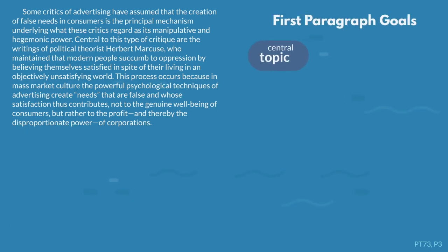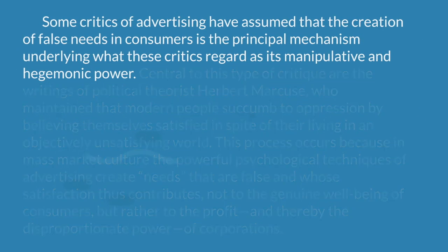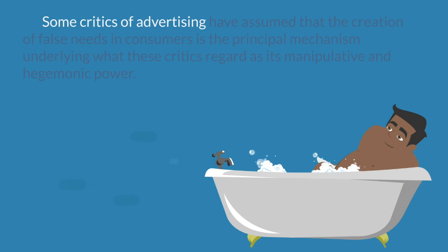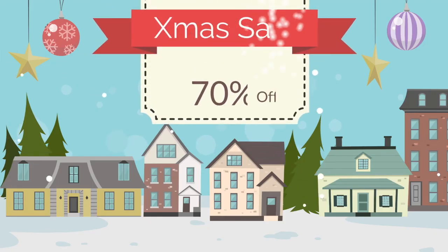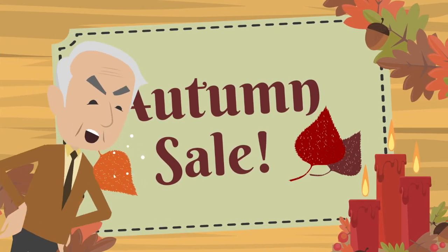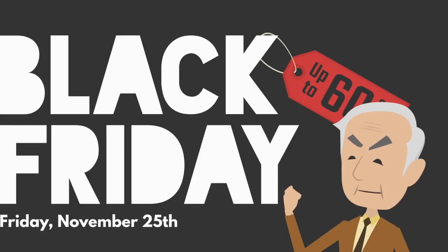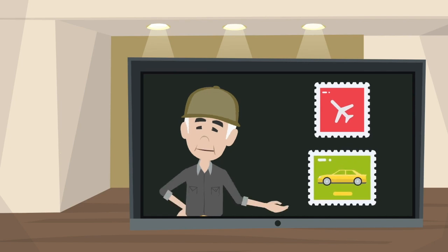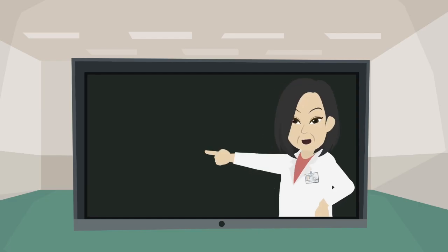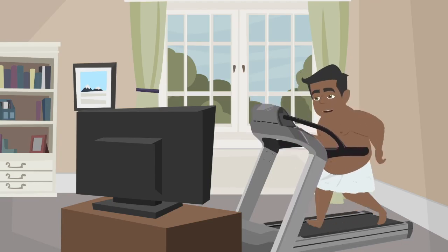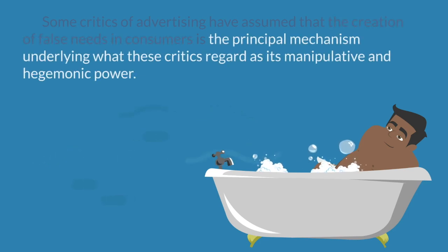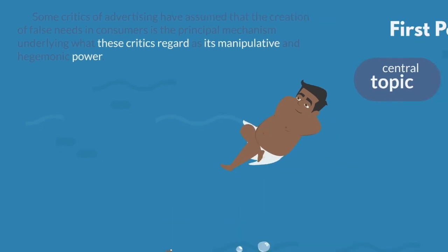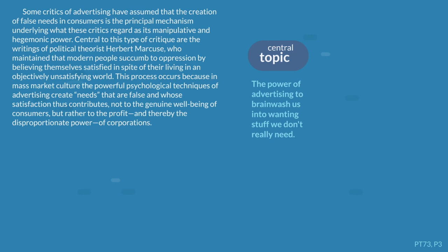Let's do the first paragraph. We need to settle on our central topic, which is normally in the first sentence. The first sentence is dense — we want to break it down into bite-sized pieces. A critic of advertising — manipulative and hegemonic. We've got people criticizing advertising by saying you are manipulating us into having false needs. We're looking for clues for a framework early on, and a sentence that starts with an attribution like 'some critics have assumed' seems to suggest we'll challenge that position, or replace it, or set up a debate.